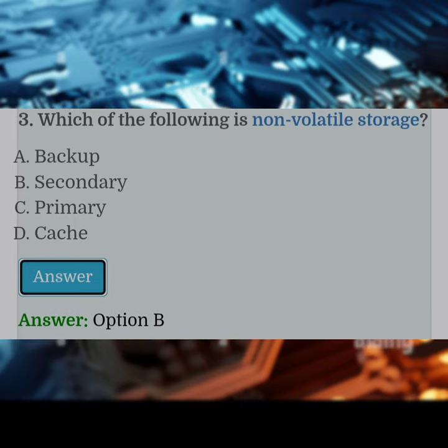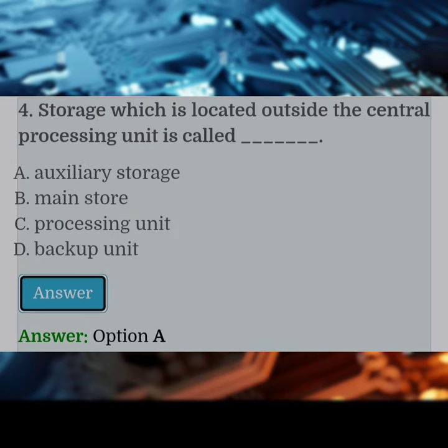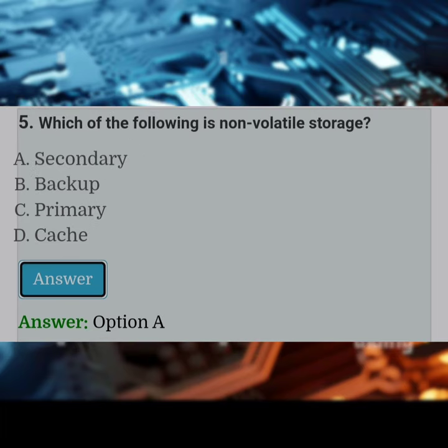Which of the following is non-volatile storage? Answer: B, secondary storage. Which is located outside the central processing unit is called blank? Answer: A, auxiliary storage. Which of the following is non-volatile storage? Answer: A, secondary.